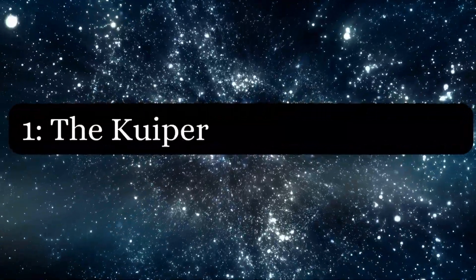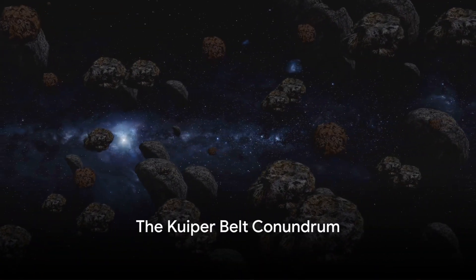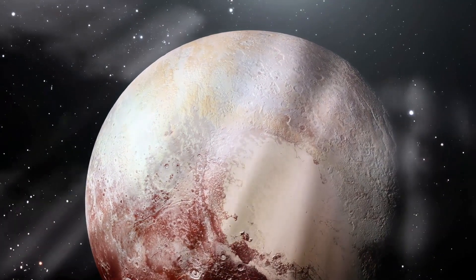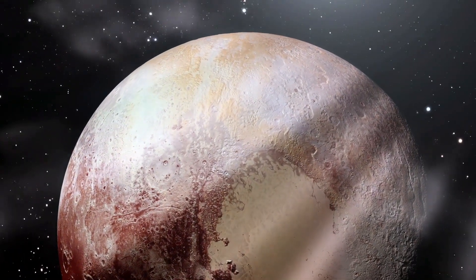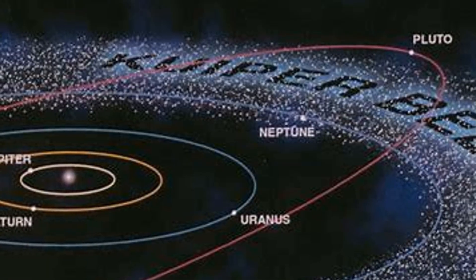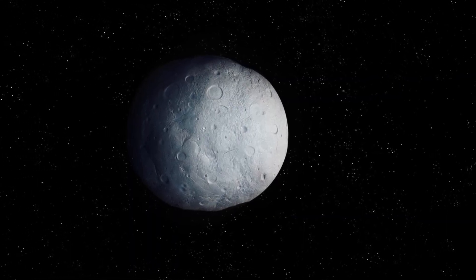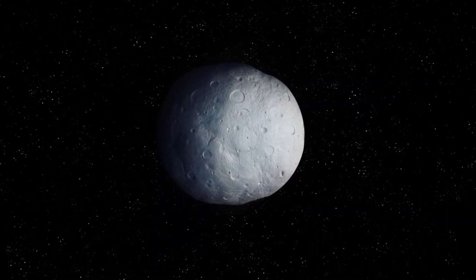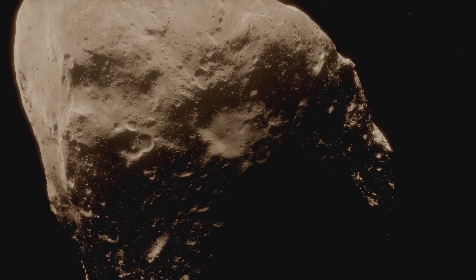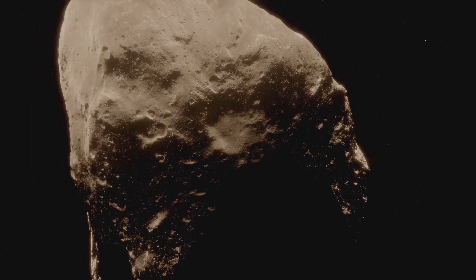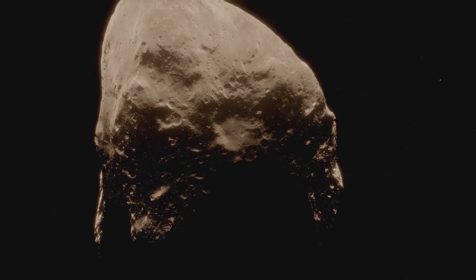Topping our list at number 1 is the Kuiper Belt Conundrum. What mysteries lie at the edge of our solar system? Let's journey to the Kuiper Belt, a vast region of icy bodies orbiting beyond Neptune. This celestial belt, more than a billion miles from the Sun, serves as the edge of our solar system. It is a realm of frosty darkness where comets and dwarf planets like Pluto reside, far from the warmth of our star. But the Kuiper Belt is more than just a cosmic freezer. It's a time capsule. The objects within it are relics from the solar system's birth, untouched by the heat and light of the Sun. They hold the secrets of our cosmic past.